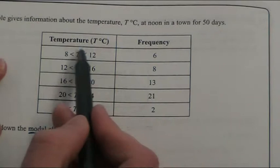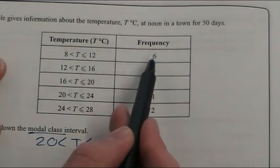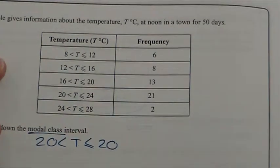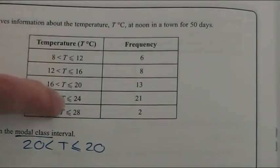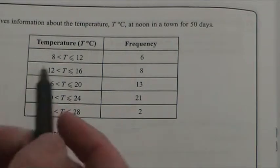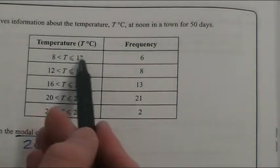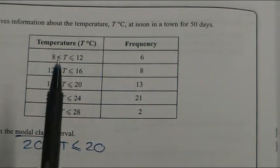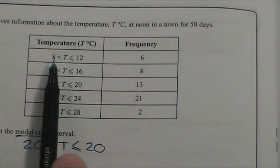But we know that whatever they were in there, there were six of them. So because it says estimate, what we're actually going to do is make an estimate guess of what the temperature actually was. And we do that using the midpoint, because it seems the most fair place to take it, or you could say it's the mean between these two numbers.